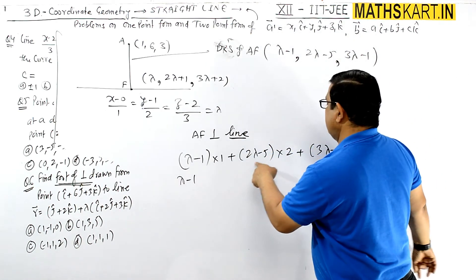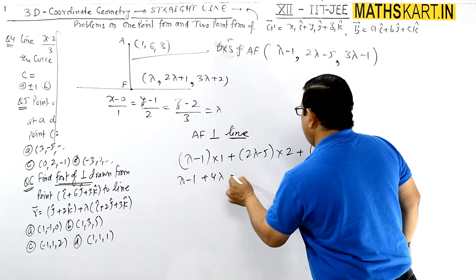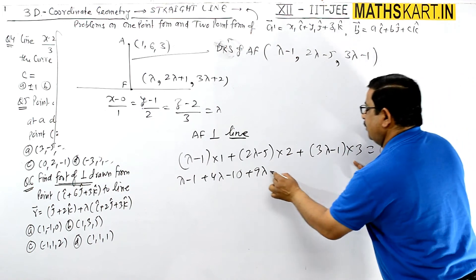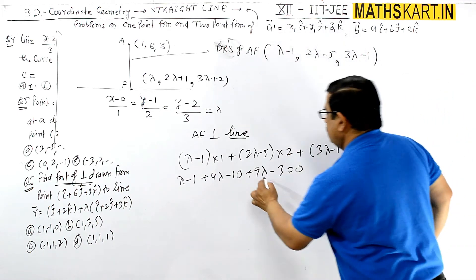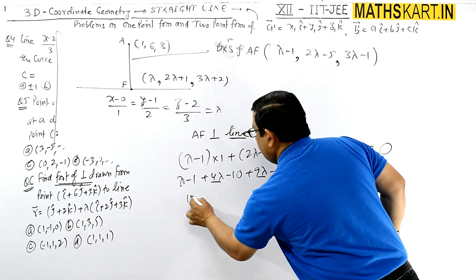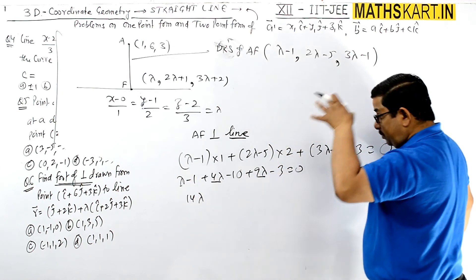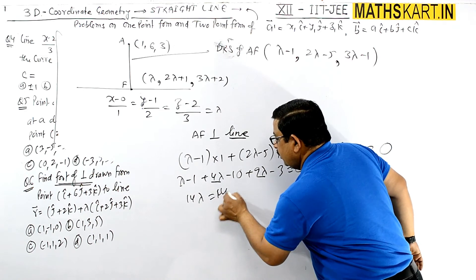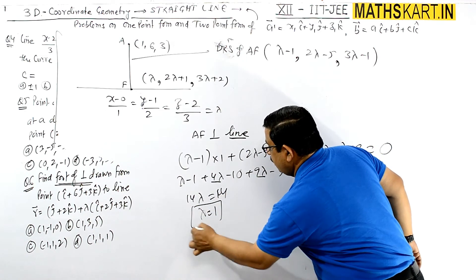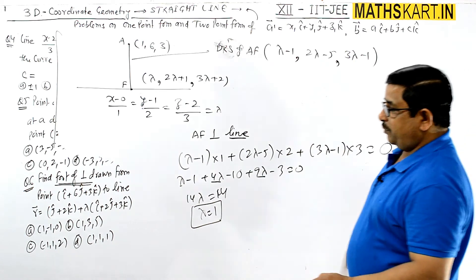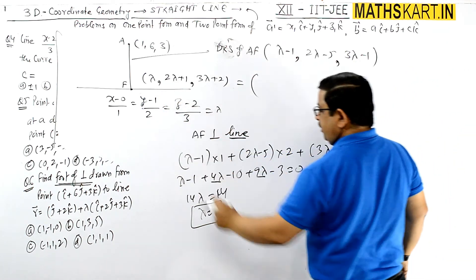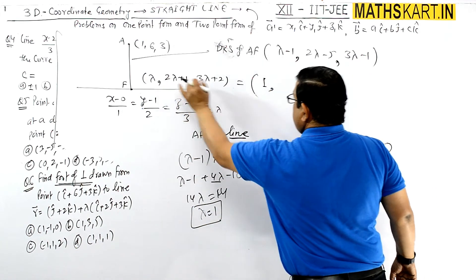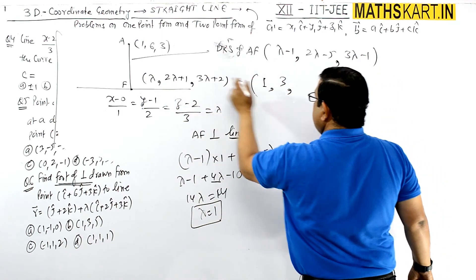Expanding: lambda minus 1 plus 4 lambda minus 10 plus 9 lambda minus 3 equals 0. So 14 lambda minus 14 equals 0, giving lambda = 1. Now putting lambda = 1 into the parametric point: x = 1 + 1 = ... wait, x = lambda + 1 = ... actually: x = 1, y = 2(1) + 1 = 3, z = 3(1) + 2 = 5. So the foot of perpendicular is (1, 3, 5).